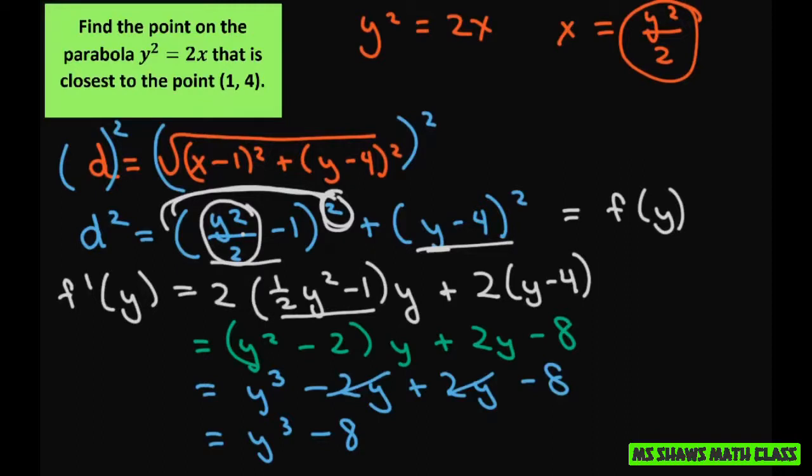Now what we're going to do is use the first derivative test for absolute extreme values. So the absolute minimum occurs when y is 2. So we set this to 0. We get y cubed equals 8. Cubed root both sides. And you get y equals 2.